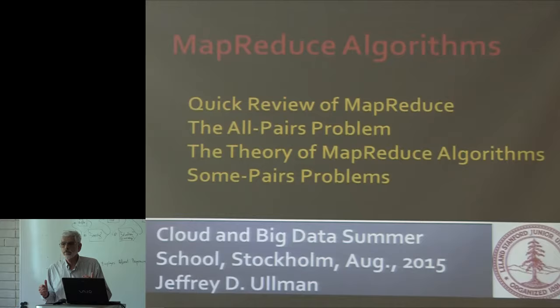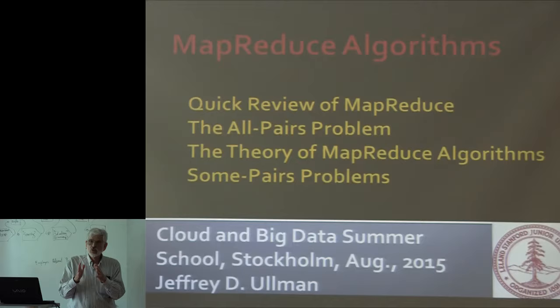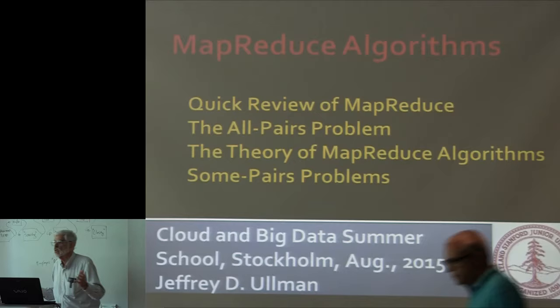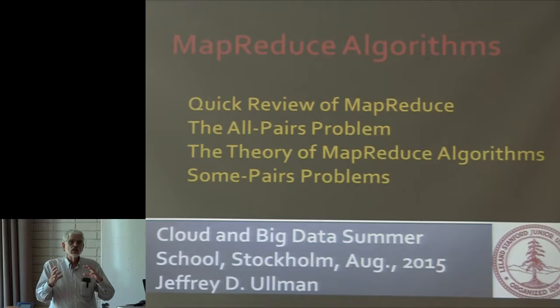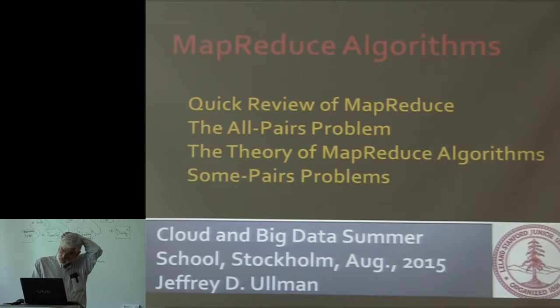The problem is: any output produced by a MapReduce algorithm has to come from some one reducer, and one reducer can only have some inputs. So if I'm going to produce all the outputs my problem requires, I have to arrange that for every output, the set of inputs it needs lives together at one reducer. That's not necessary in other models like PRAM models of parallelism. I assume everybody here has had their fill of MapReduce and how it works, so I'll go over the terminology very quickly.